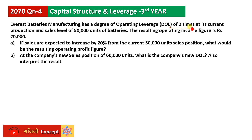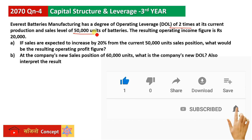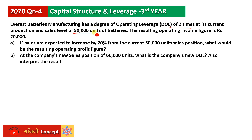The current production or sales level is 50,000 units of battery. The average manufacturing or production rate is based on 50,000 units. The operating income, which is EBIT, is 20,000.